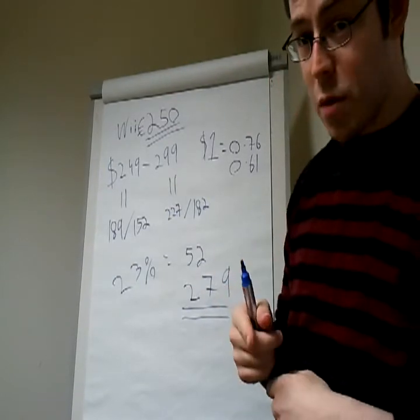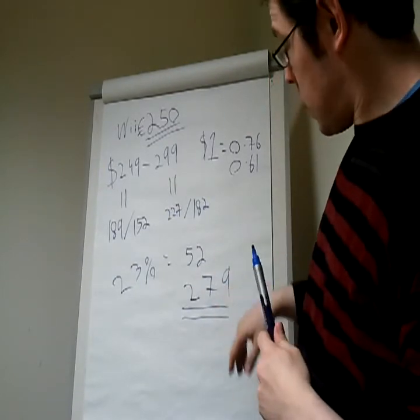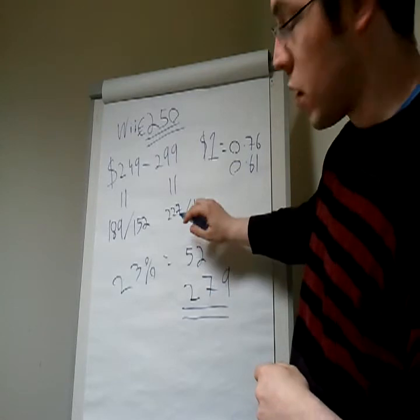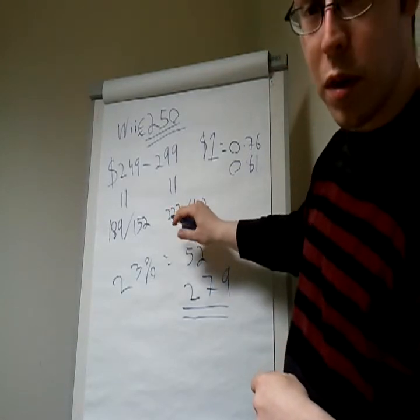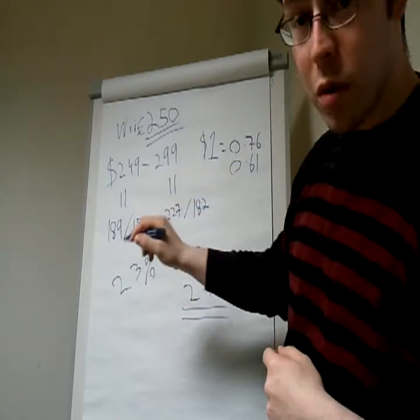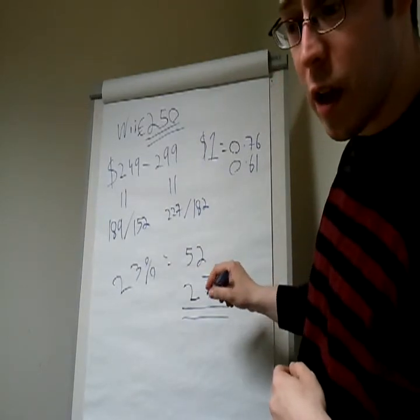To recap, we know that the Wii U is going to cost about 227 for the premium bundle, euros in Ireland. We can work the VAT out as being about 52, so total 279.